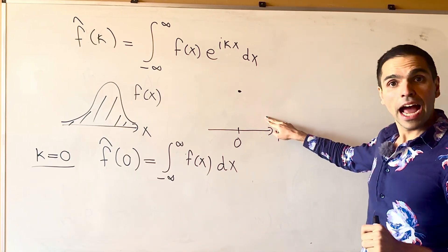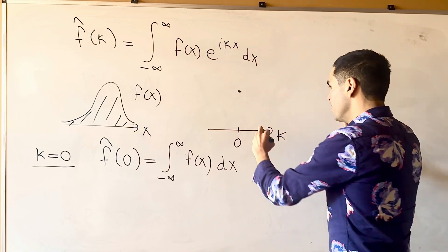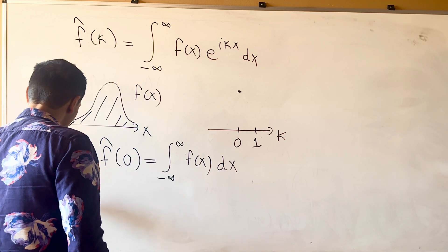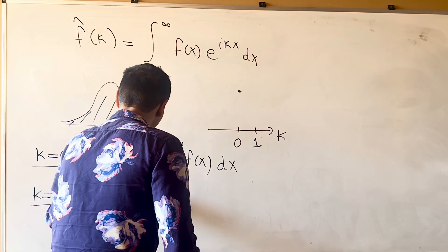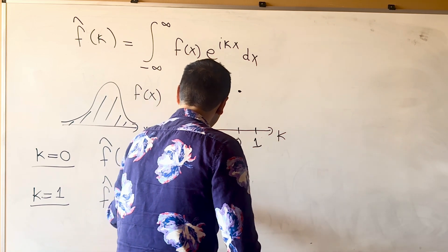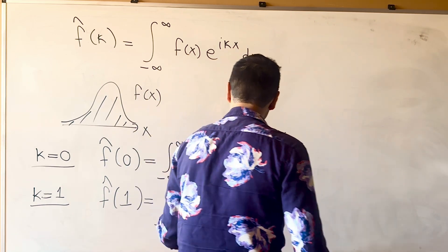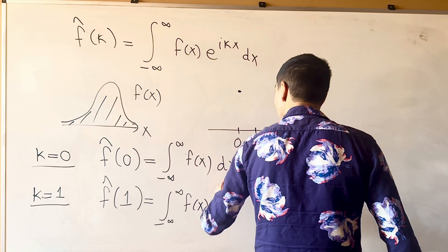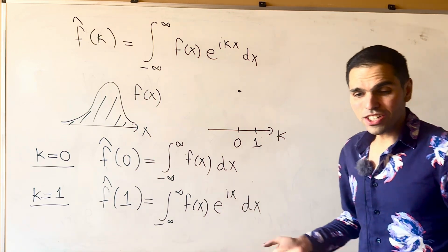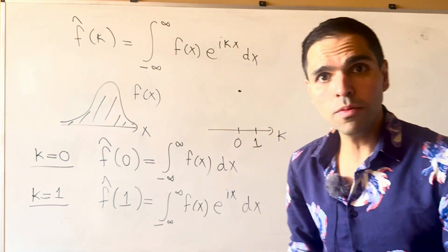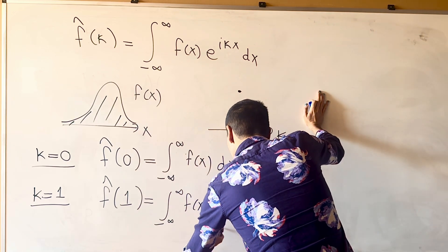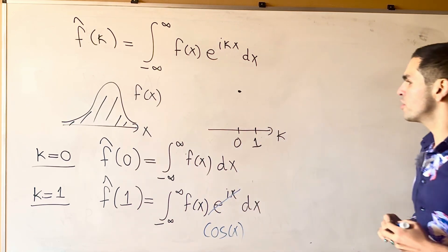And then, let's see what happens if we increase kappa. So, let's look, for instance, at kappa equals 1. Well, then, f hat of 1 is the integral from minus infinity to infinity of f of x, e to the i x dx, which, just for practical purposes, in terms of the intuition, just think of e to the i x as cosine of x, just to be concrete.